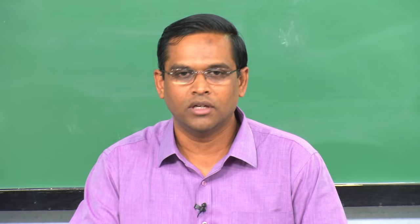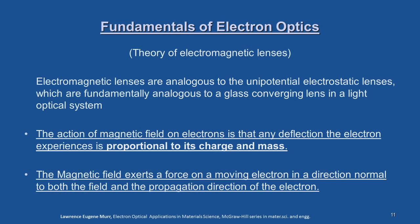With this introduction to electrostatic lenses, we will now look at how electromagnetic lenses are developed in modern electron microscopes. Since electrostatic lenses are analogous to the optical system, the electrostatic lens design is adapted to the electromagnetic lens. The electromagnetic lenses are analogous to the unipotential electrostatic lenses, which are fundamentally analogous to a converging glass lens in a light optical system. We now need to understand what the additional magnetic field does to the electron path.